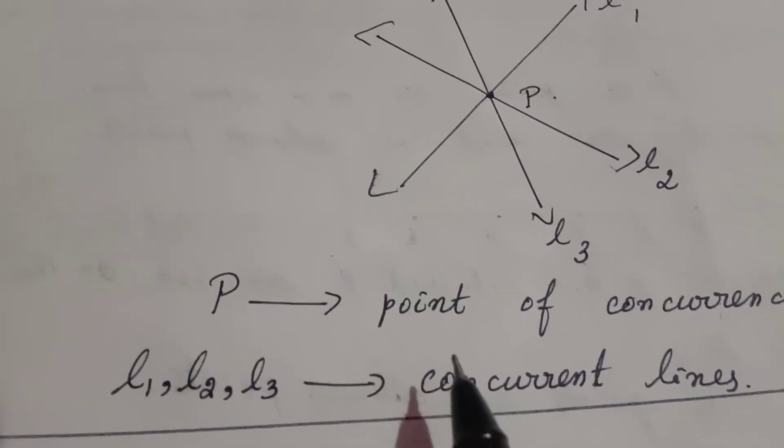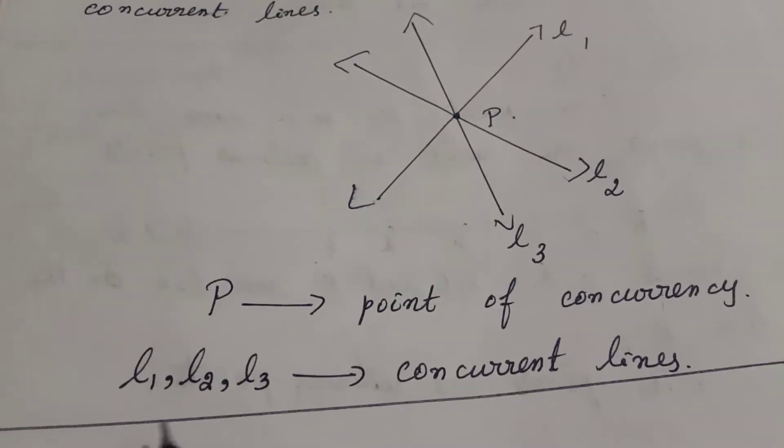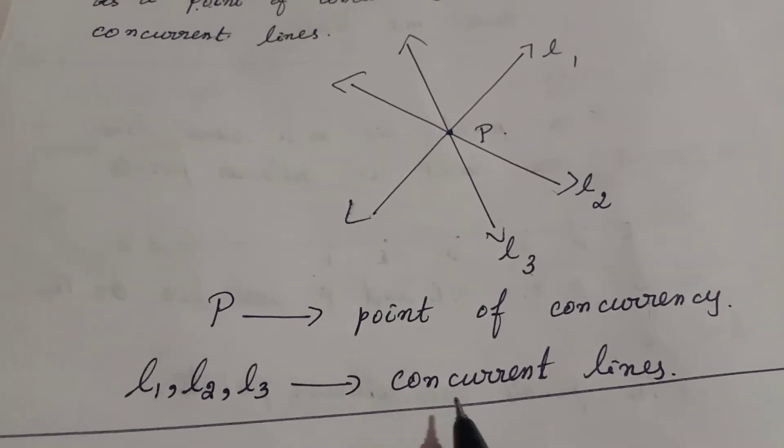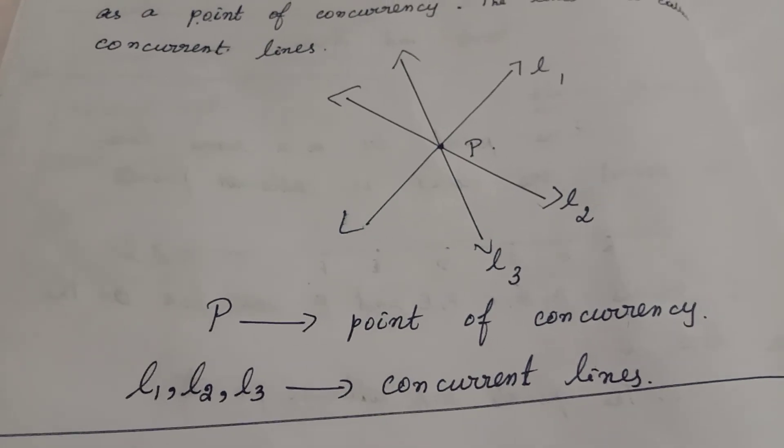P is the point of concurrency for lines L1, L2, and L3. These three lines are called concurrent lines.